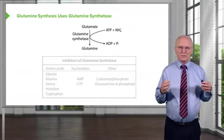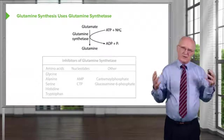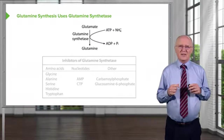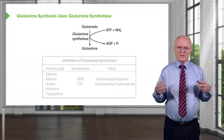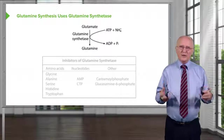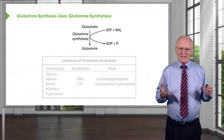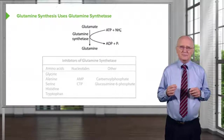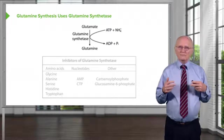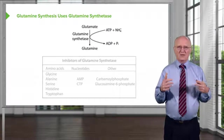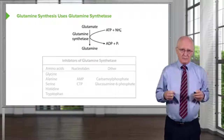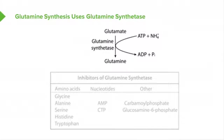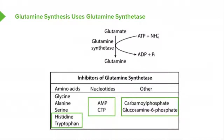When people talk about detoxing, they often don't understand what that actually means biochemically. This reaction actually detoxifies ammonia — it grabs free ammonia, which is toxic, and incorporates it onto an amino acid to make glutamine. However, this enzyme is important to control, because cells don't want to make too much of anything. If a cell makes too much glutamine, it will have other problems, so the synthesis of glutamine must be carefully balanced.